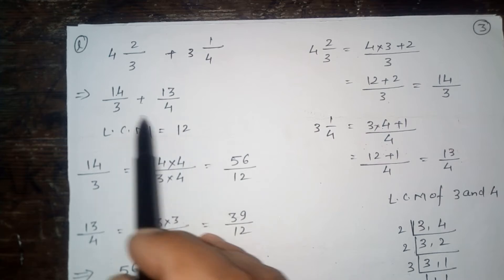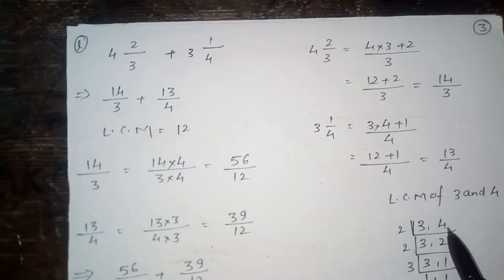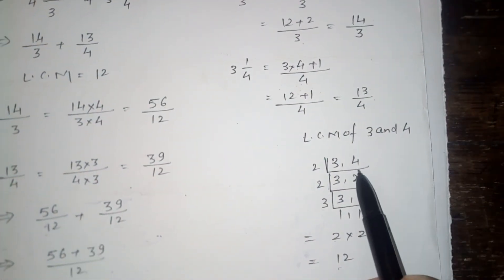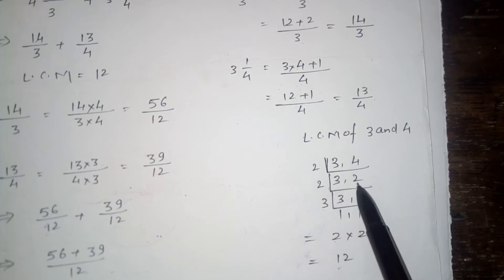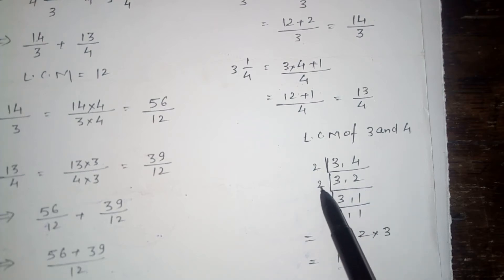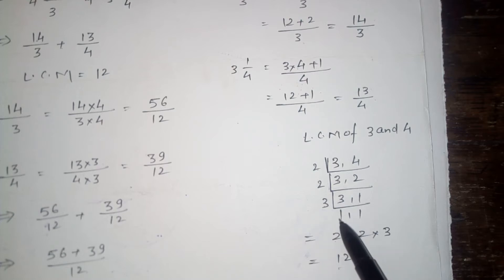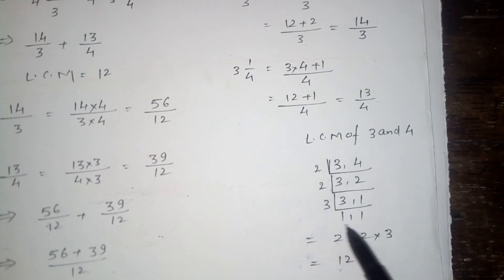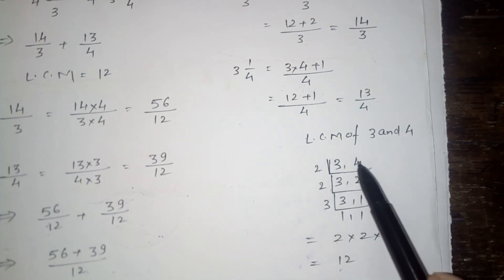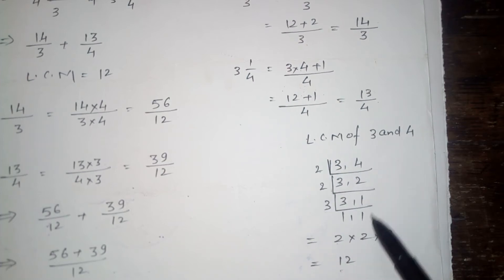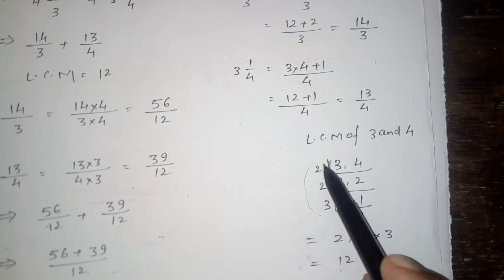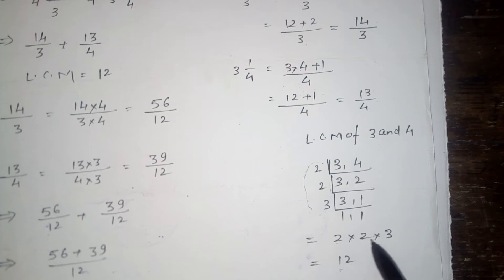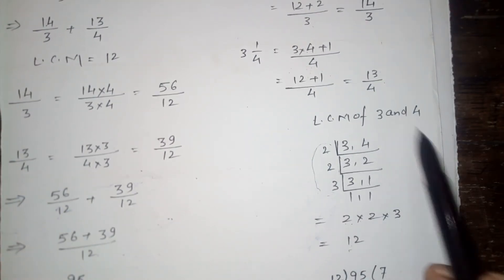So what will you do? We will take out the LCM of 3 and 4. Look here using the short division method: 3 is not divided by 2, so we keep 3; 4 divided by 2 gives 2; then 3 is not divided by 2, keeps 3; 2 divided by 2 gives 1; and 3 divided by 3 gives 1. The product of all these prime numbers is 2 × 2 × 3 = 12. So the LCM of 3 and 4 is 12.